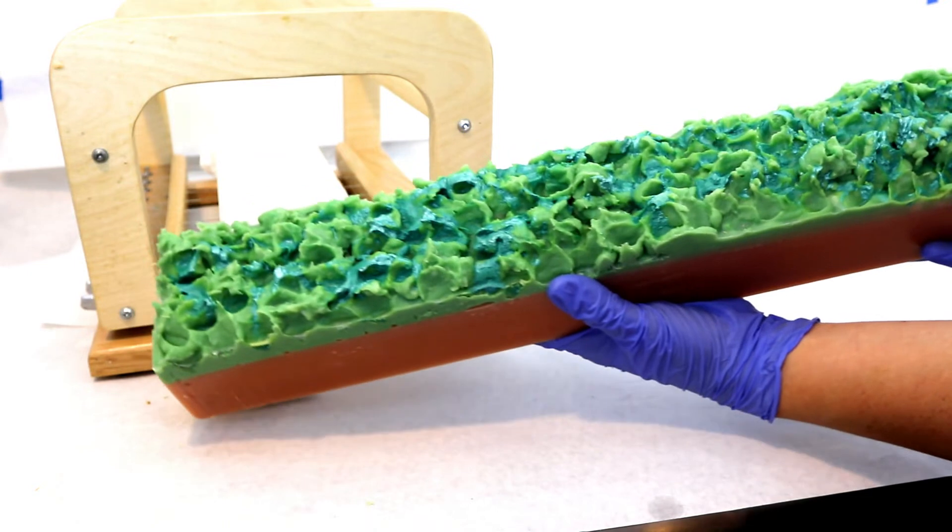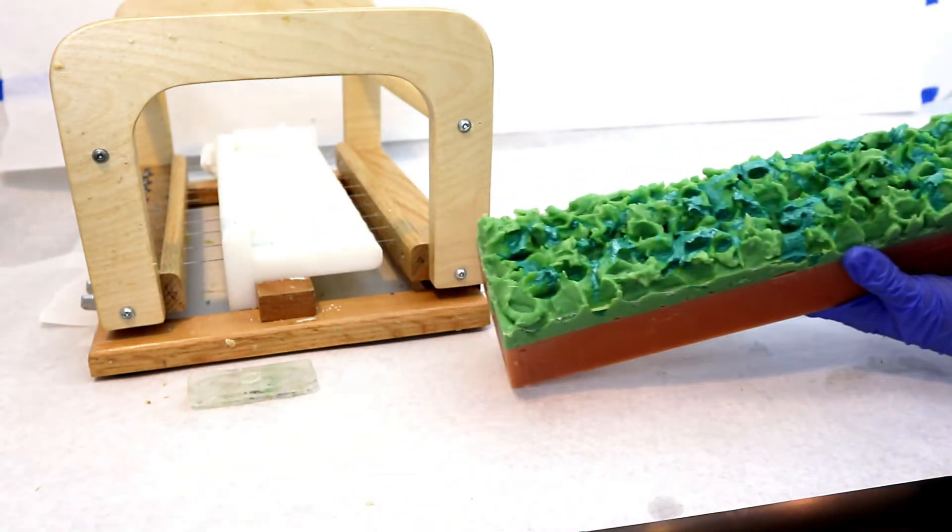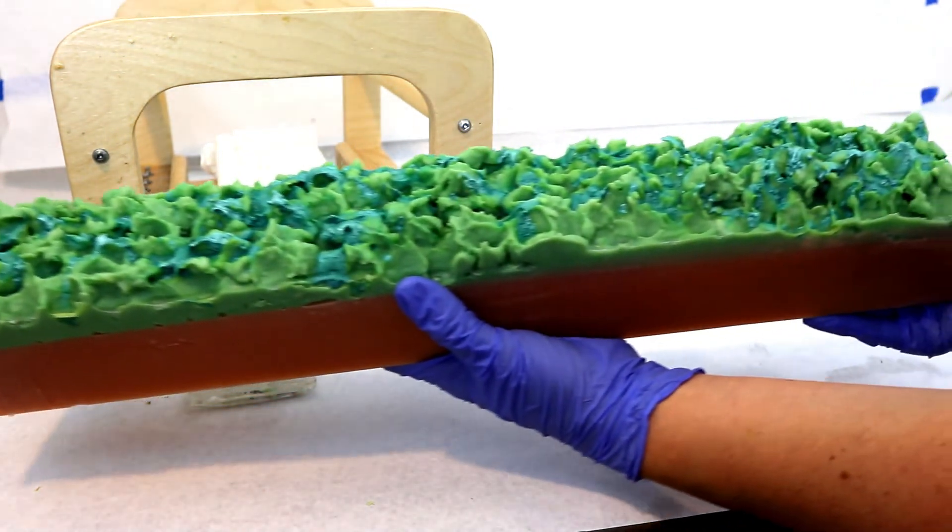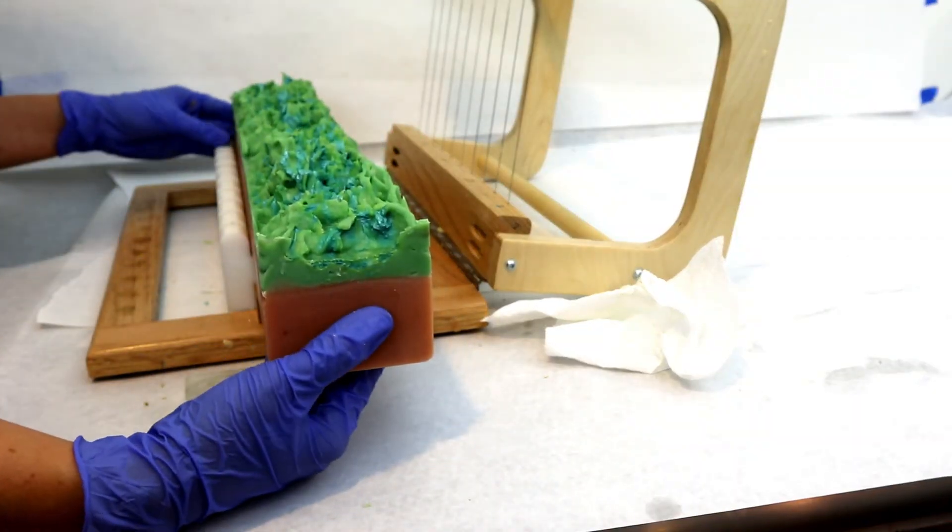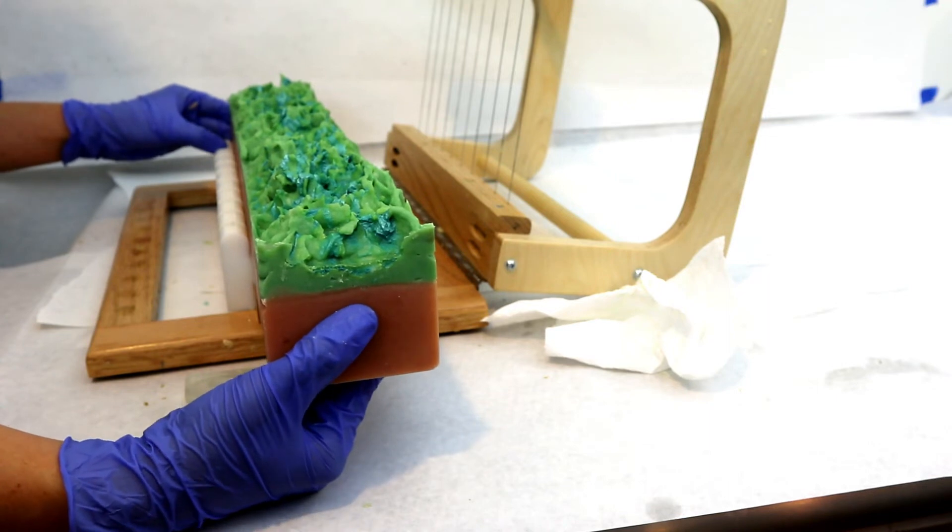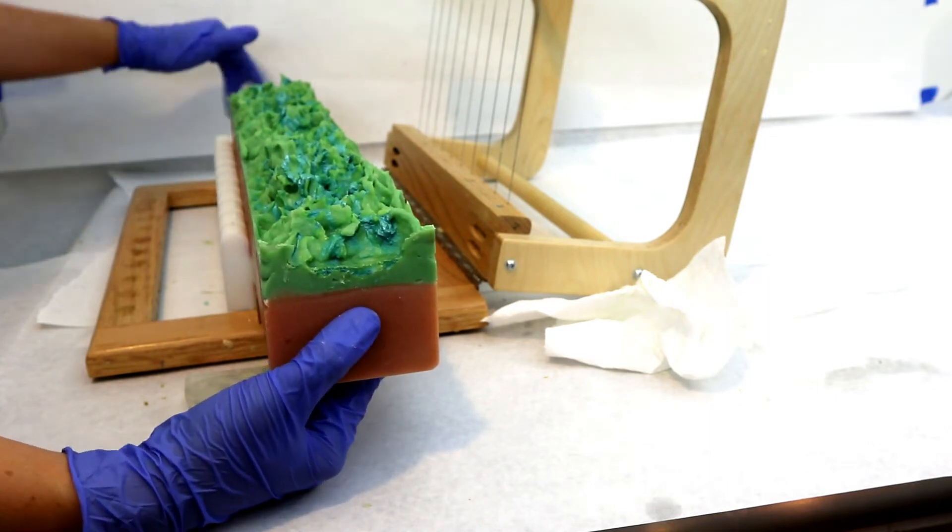All right, it's time to cut it. So here is the soap, it's all out of the mold. You can see the bottom part turned out really nice color - that rose kaolin clay turned out really nice. Now we're going to cut it and see what this soap looks like. So here's the cut.